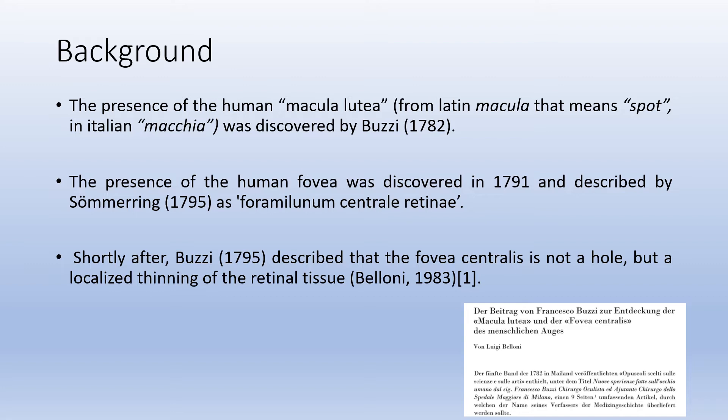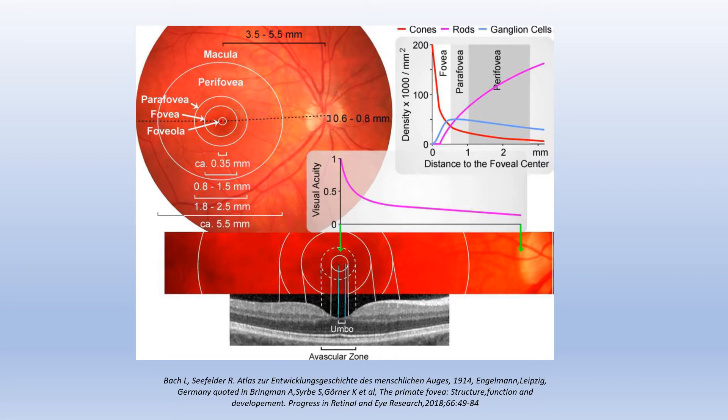The presence of the human macula was discovered by Buzzi in 1782. The presence of the human fovea was discovered in 1791 and described by Somering. Shortly after, Buzzi in 1795 described that the fovea centralis is not a hole but a localized thinning of the retinal tissue.